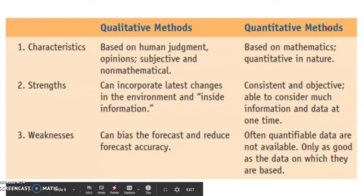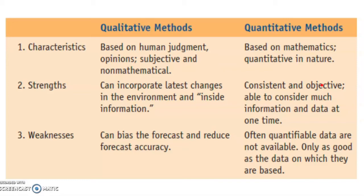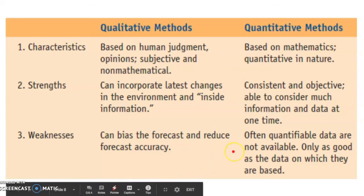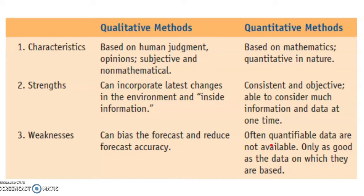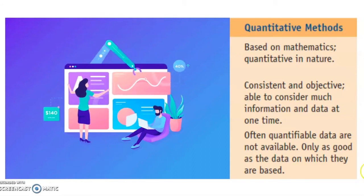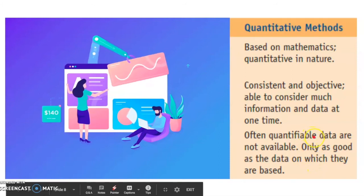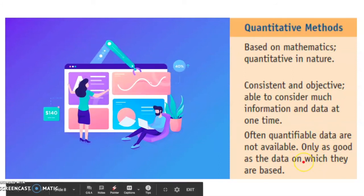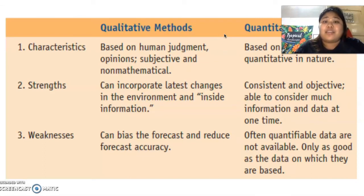Quantitative methods, on the other hand, are consistent and objective, meaning they do not suffer from the biases found in qualitative forecasting. Although quantitative methods are objective and consistent, they require data in quantifiable form in order to generate a forecast — often we do not have such data, for example if we are making a strategic forecast or forecasting sales of a new product. Also, quantitative methods are only as good as the data on which they are based. Both quantitative and qualitative methods have their place, and a good forecaster learns to rely on both.